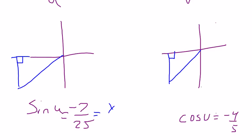So sine we know is y over r. That would mean the y value on this triangle is negative 7, the r value is 25. Pythagorean's theorem tells that this side must be negative 24.